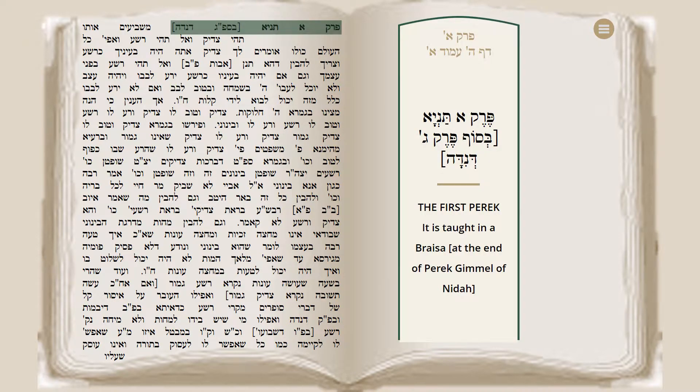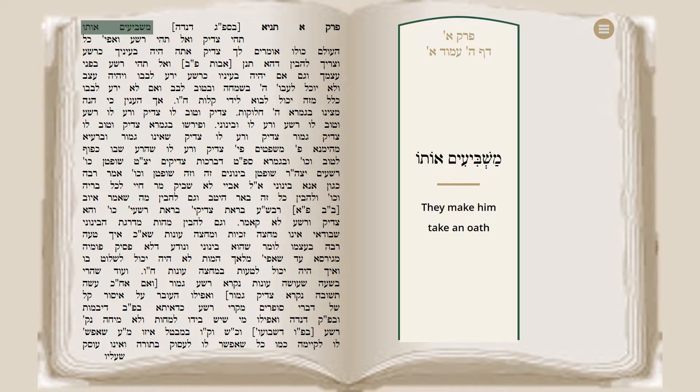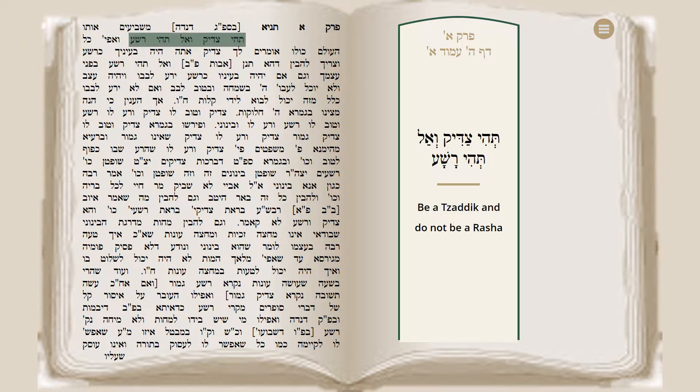Perak Aleph — the first Perak. The Alta Rebbe begins by presenting a teaching from a Braisa, taught in Perek Gimmel of Nida. The Braisa says: They make the Neshamah take an oath before it enters a person's body. And the oath is: Tihi Tzaddik, V'al Tihi Rasha — Be a Tzaddik and do not be a Rasha.